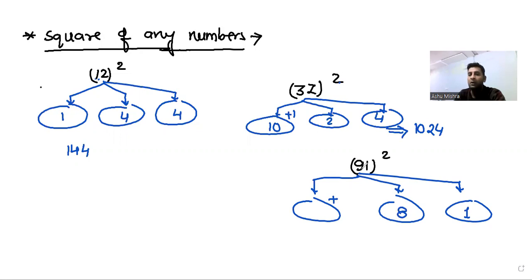9 square is 81, 81 plus 1 is 82. Final answer is 8281.